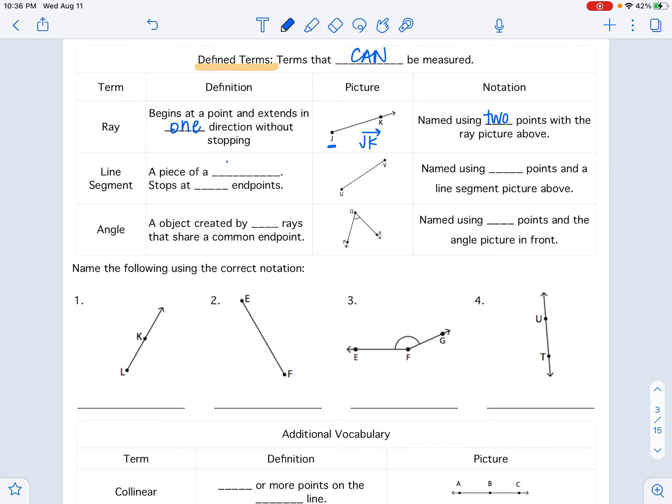We also have a line segment. It's a piece of a line. That's why it's called the line segment. And it stops at two end points. So instead of going on forever, it stops. We can measure it. It's named using, again, two points with a line segment above it. So this would be UB. No arrows on that.